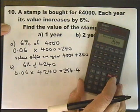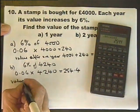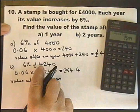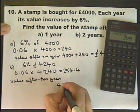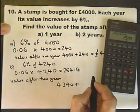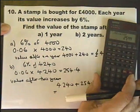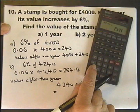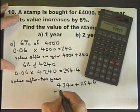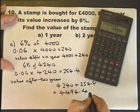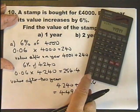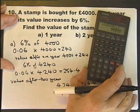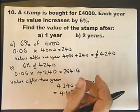So value after 2 years is this value, the value at the end of the first year, plus the amount the money increases during that year. So 4,240 plus 254.4. Let me type it in to make sure: 4,240 plus 254.4 equals £4,494.4. Always do it a couple of times just to make sure you don't press any buttons wrong.